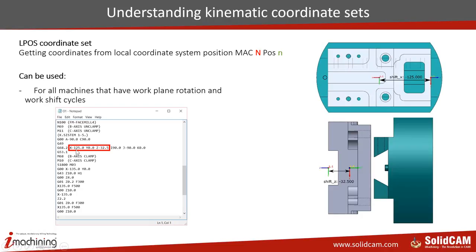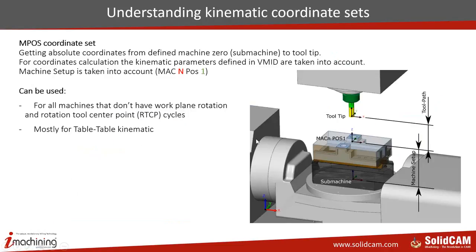Here is a nice example from FANUC using function G68.2. This is exactly the function for work plane rotation and work shift, where the first three values are always X, Y, Z shifts, and I, J, K are the Euler angles for the work plane rotation.